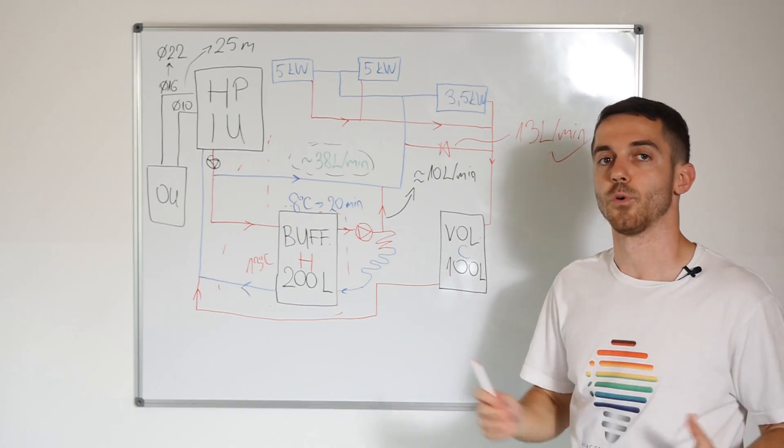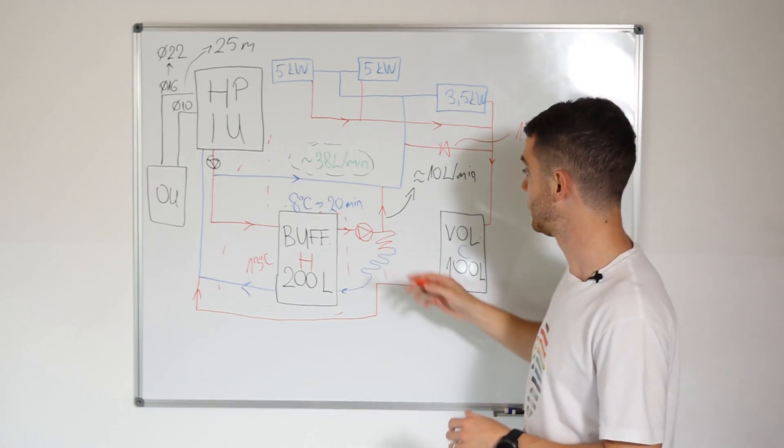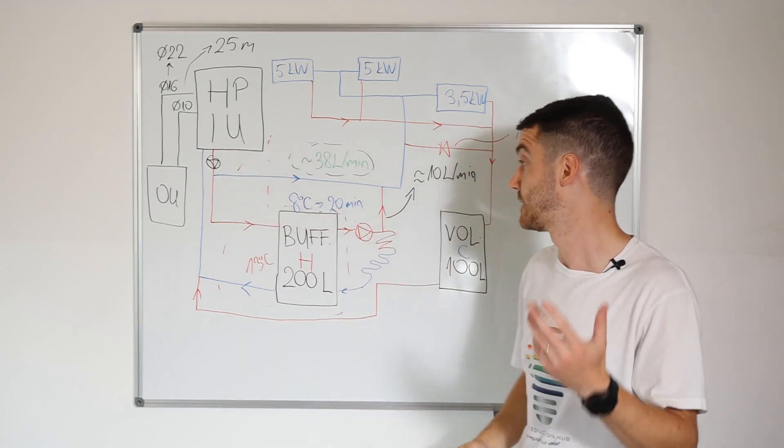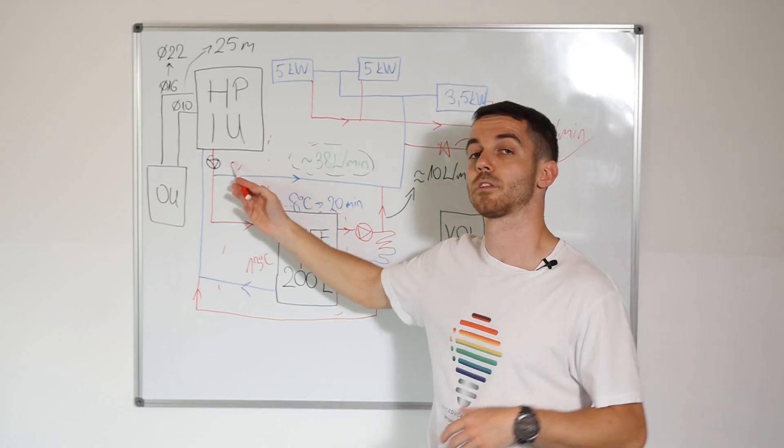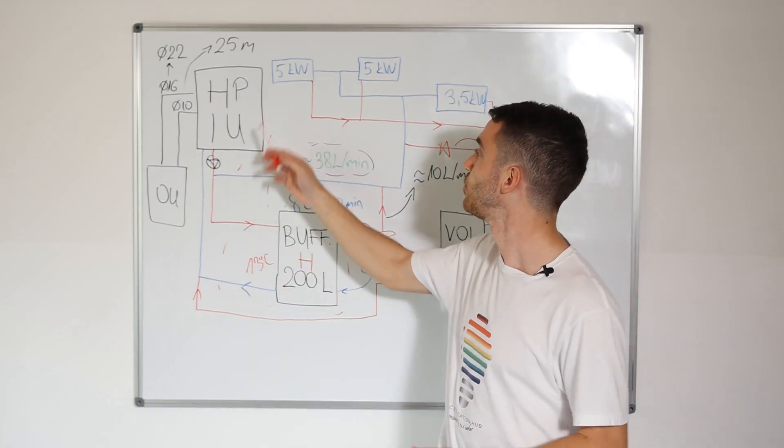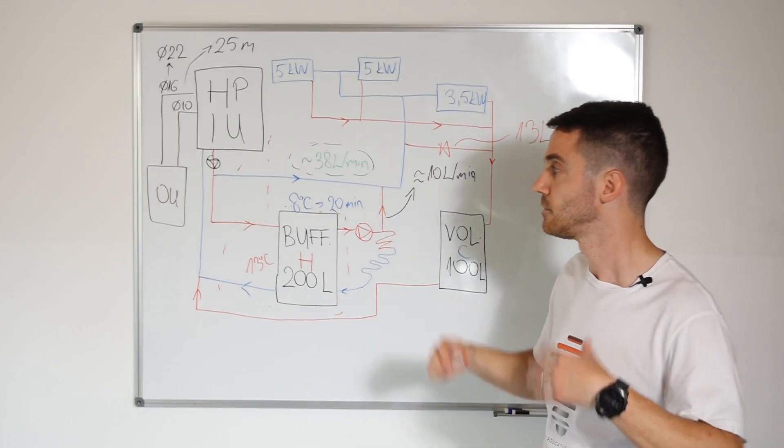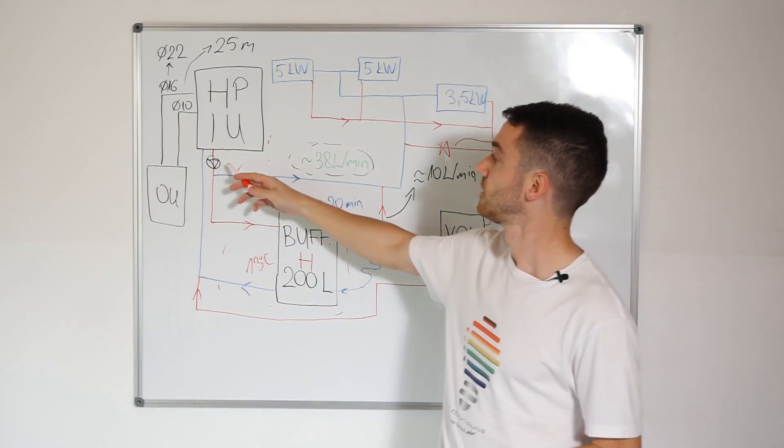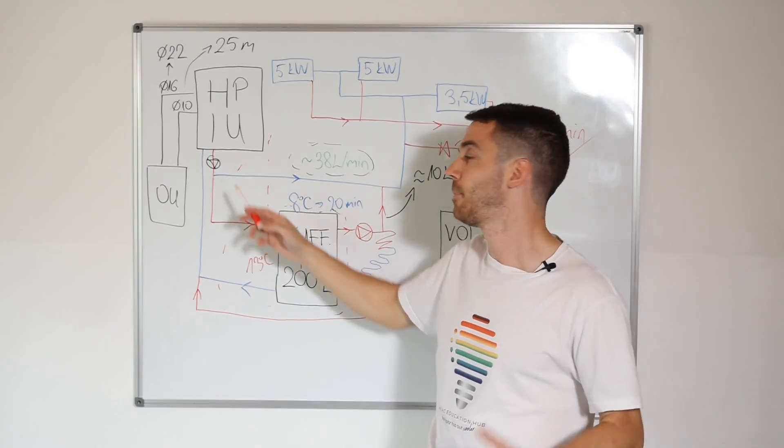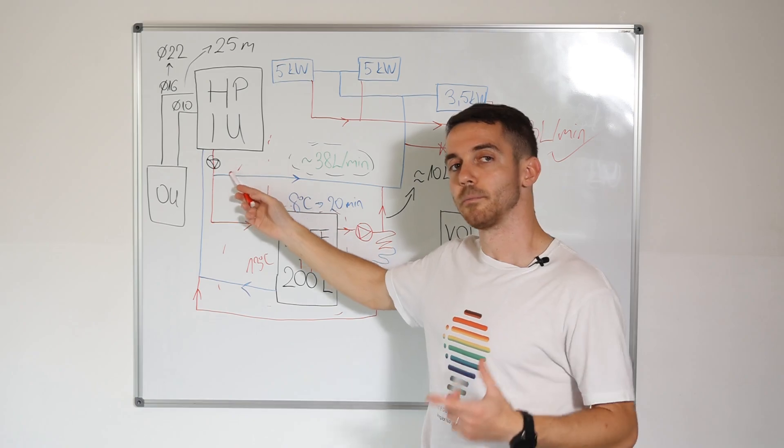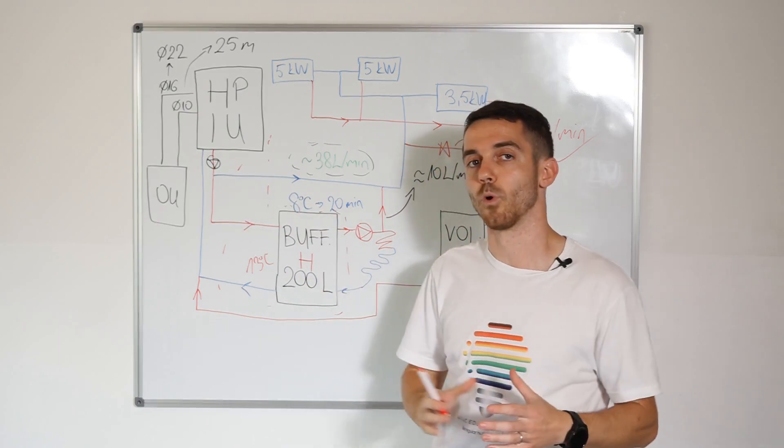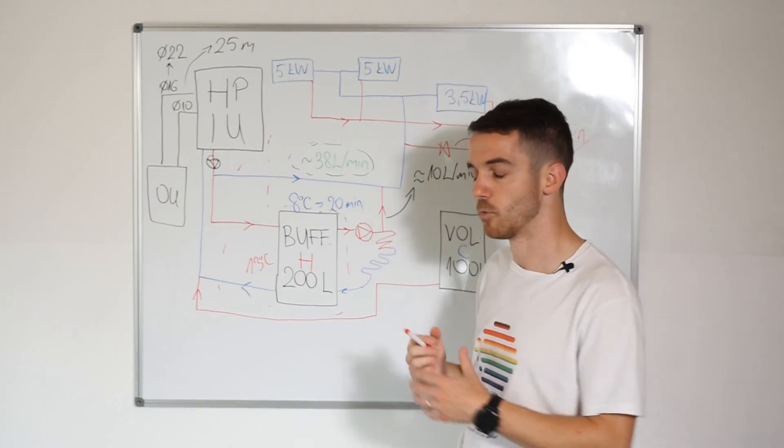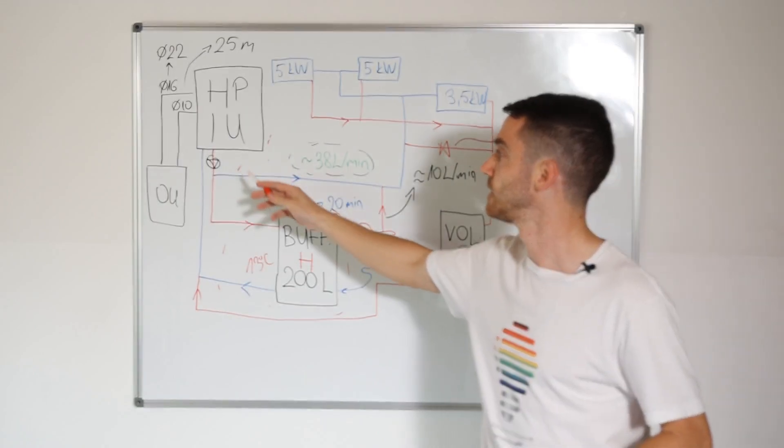Also, it was not clear for customer and for installer why this pump is working, so this Grundfos pump, and this pump is not working. They said that this pump is not strong enough to feed these fan coils. This is not true because this pump is stronger than this pump. But internal pump of heat pump needs to follow algorithm and needs to have minimum flow rate to have proper operation. This pump could work on minimum, much lower than this one.